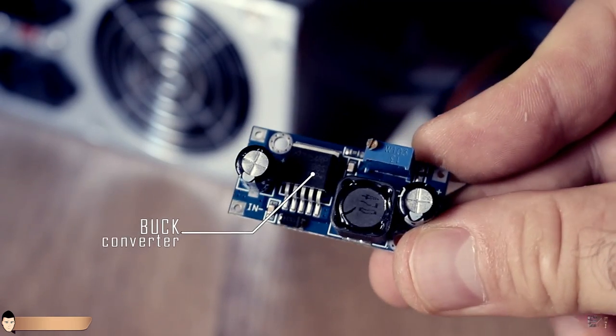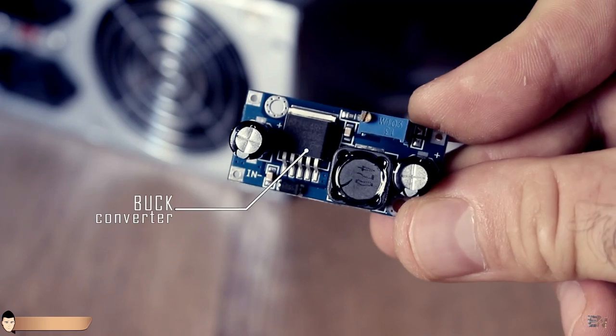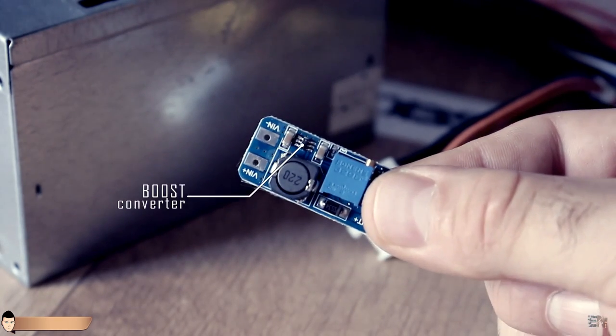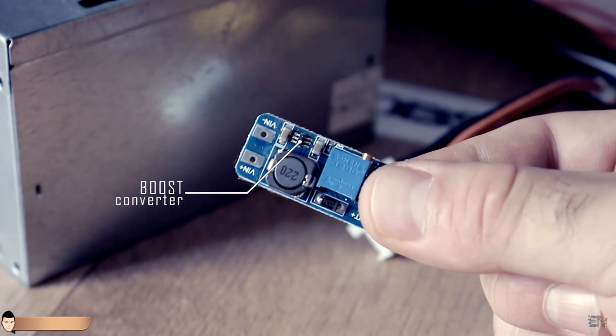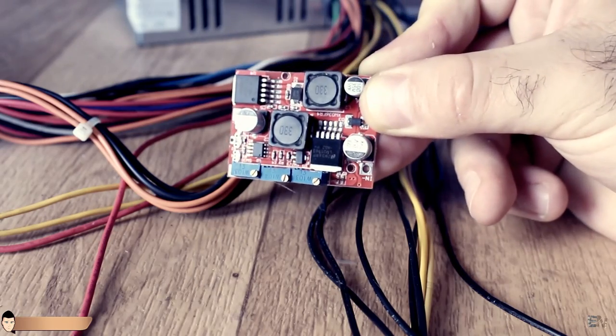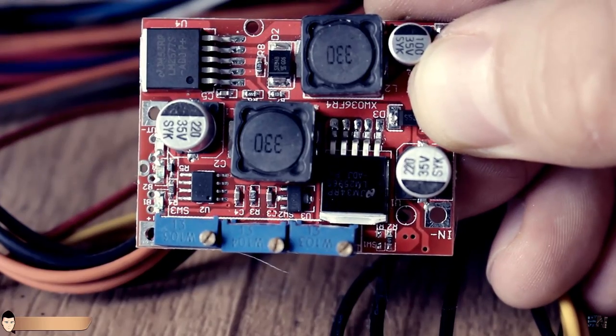To step down the voltage we could use a buck converter, also called step down converter because it lowers the voltage. To step it up we could use a boost converter, also called step up converter. There is this perfect module that includes both converters in just one board.